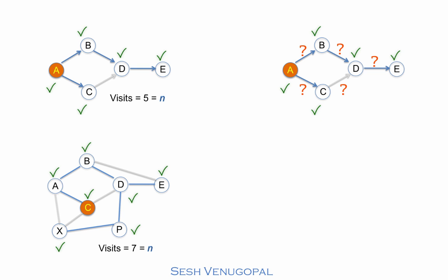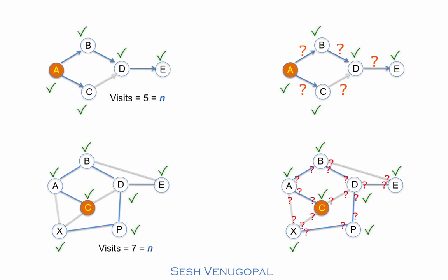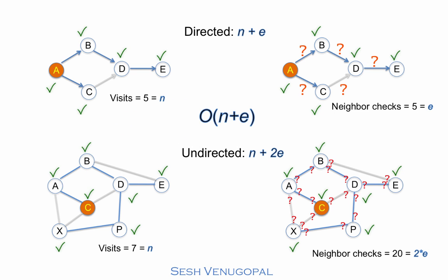As for the neighbor checks, there's a small variation depending on whether the graph is directed or not. If the graph is directed and has e edges, the neighbor checks would amount to e, since each edge contributes one such check. Otherwise, each edge would contribute two checks, since the edge would be involved in a check once from each of its endpoints. This gives a total time units of n plus e for a directed graph and n plus 2e for an undirected graph. And they both convert to a running time of O of n plus e.